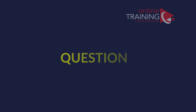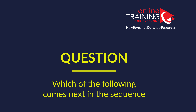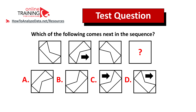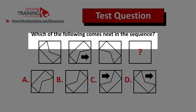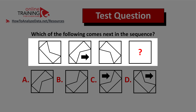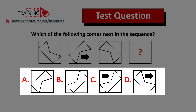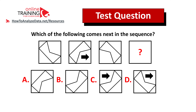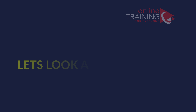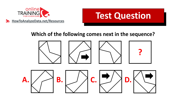Here's a tricky question that validates your knowledge of pattern recognition and logical reasoning. Which of the following comes next in the sequence? You're presented with four squares — the fourth has a question mark — and you have four choices: a, b, c, and d. Give yourself 10 to 15 seconds to figure it out.